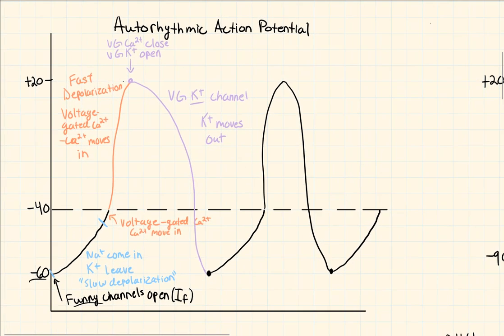This is a continuous cycle — the cardiac cycle in terms of electrical activity. This means the heart does not need any neuronal influence to beat; it spontaneously generates its own action potentials. The heart does receive neuronal influence — the sympathetic and parasympathetic nervous systems can increase or decrease heart rate — but the heart can contract on its own based solely on the autorhythmic cells.